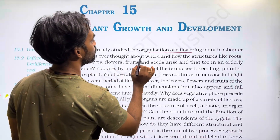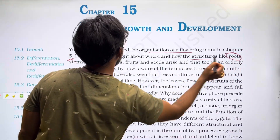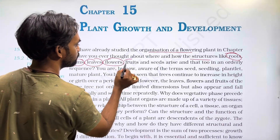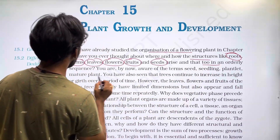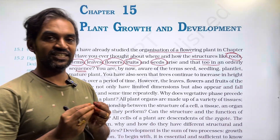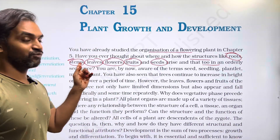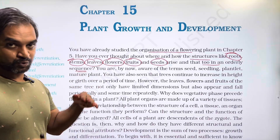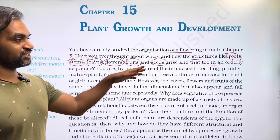Have you ever thought about where and how structures like root, stems, leaves, flowers, fruits, and seeds arise, and that too in an orderly sequence? From seed germination, we get the root first, then the stem, then leaves on the stem, and then there is a growth period that leads to flower, fruit, and seeds.